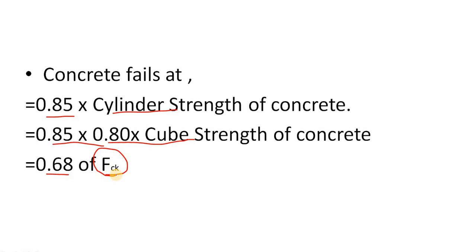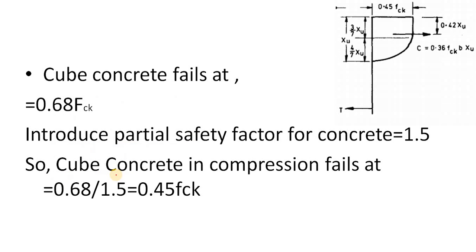Which is the case for our IS-456. Now IS-456 introduces a partial safety factor which is known as gamma M. The value of gamma M for concrete is 1.5. So if you divide this 0.68 by 1.5, you will get 0.45 FCK, and this is the value which you use in your design.